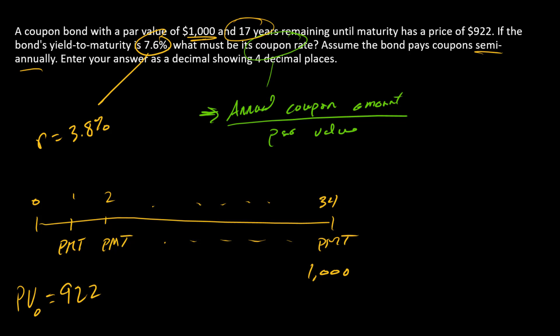In our financial calculator, to do that we need to figure out our inputs. So $1000 is FV, $922 is PV, 34 is N, and i is 3.8.